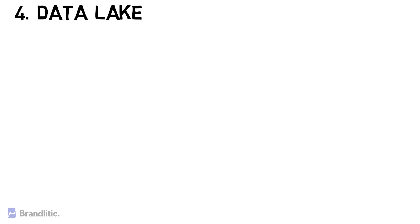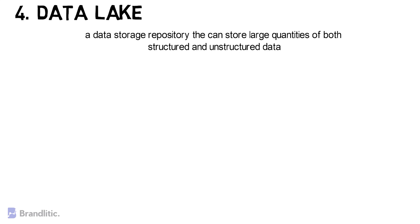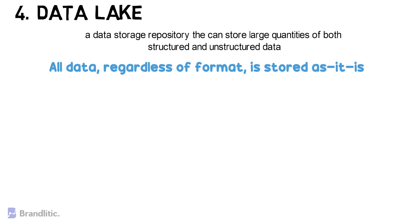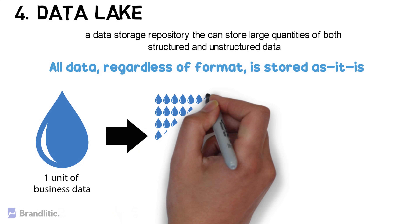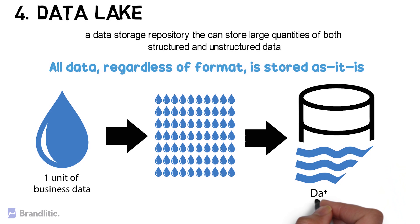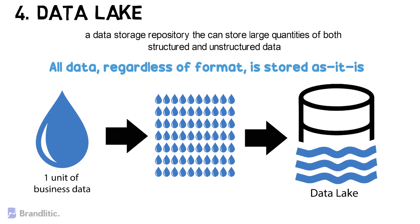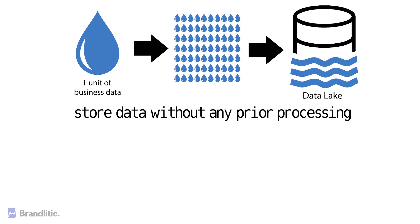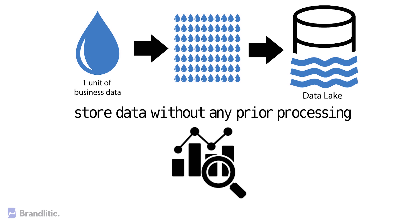What is a data lake? A data lake is a data storage depository that can store large quantities of both structured and unstructured data. A data lake functions similar to how its name suggests — all data, regardless of format, is stored as it is. Imagine each bit of your business data is like a drop of water; these tiny drops flow freely from various streams and rivers until they reach their final destination — your data lake. A major benefit is that data lakes can store data without any prior processing; the data simply flows in and stays there, awaiting requests from analysts and business users. This free-flowing process means more data can be collected, stored, and retrieved than ever before.